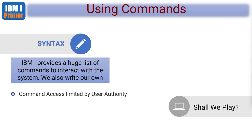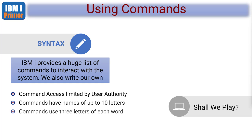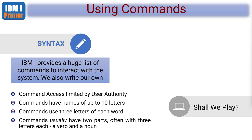IBM gives us a huge list of commands to interact with the system and we can also write our own. Access to these commands is limited by user authorities. Commands can be a maximum of 10 characters long, so they're generally broken down into three letters of each word. This is IBM's naming standard - for example, display program would be DSP for display and PGM for program.